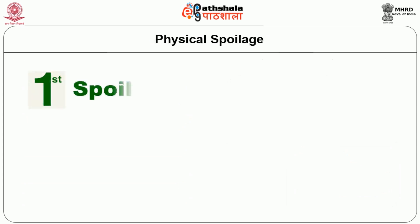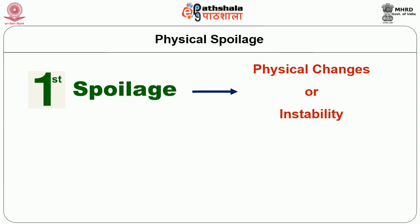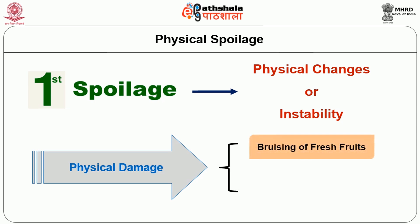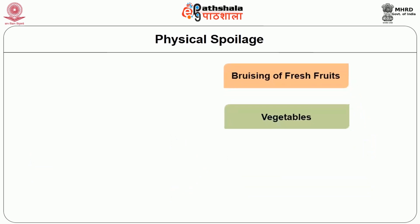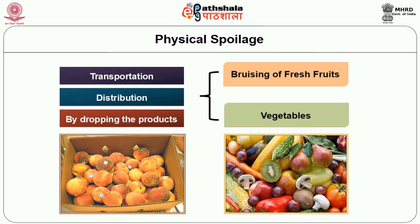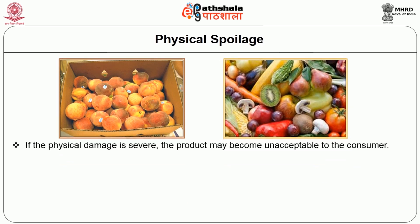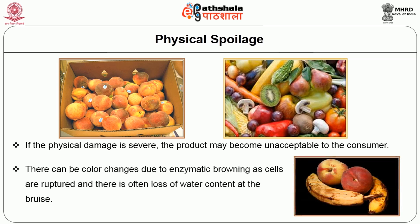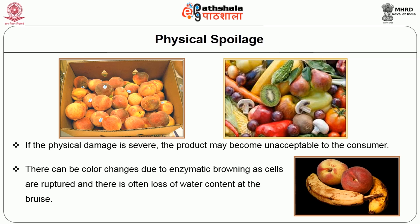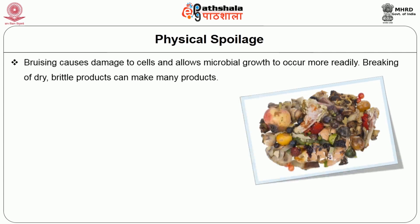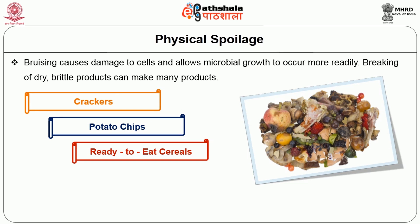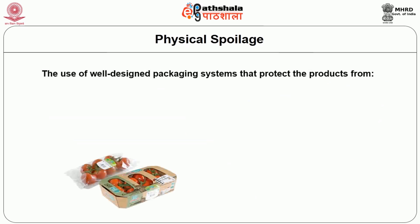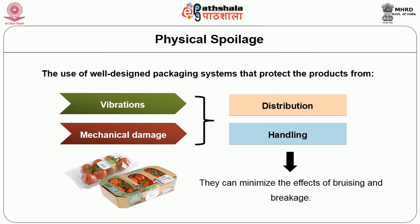The first type of spoilage that can occur is due to physical changes or instability. This can include physical damage such as bruising of fresh fruits and vegetables. Bruising can occur during transportation and distribution or by dropping the product. If the physical damage is severe, the product may become unacceptable to the consumer. There can be a colour change due to enzymatic browning as cells are ruptured, and there is often loss of water content at the bruise. In addition, bruising causes damage to cells and allows microbial growth to occur more readily. Breaking of dry, brittle products can make many products such as crackers, potato chips, ready-to-eat cereals and many frozen foods unacceptable. The use of well-designed packaging systems that protect the product from vibrational and mechanical damage during distribution and handling can minimize the effect of bruising and breakage.